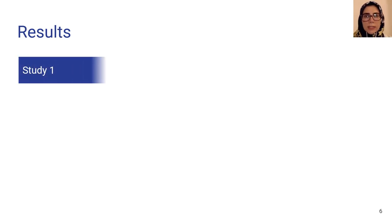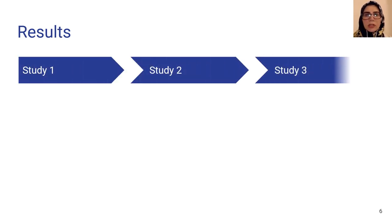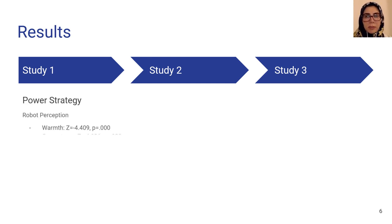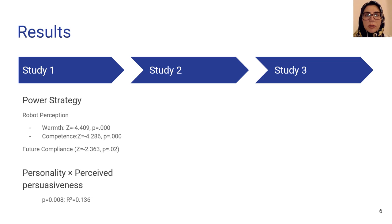Overall, the results of these three studies show that social power adds persuasiveness to social robots. The first study showed that different power strategies lead to different perception, and also people with different personalities prefer different power strategies.